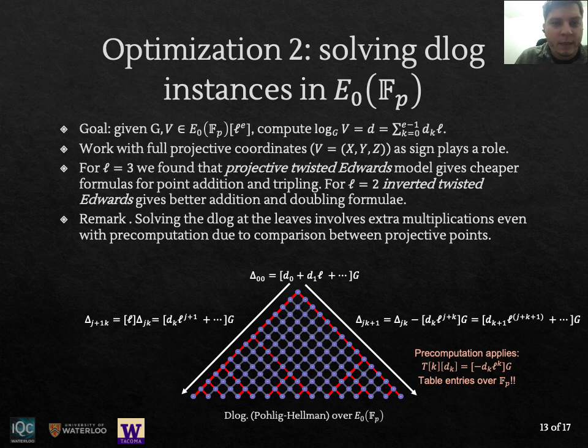And here we should mention that solving the small discrete logarithms at the leaves, you can still use tables for computing those multiples of the generator. But the thing is that to compare with the table entries, we still have to do some extra field multiplications because we have projected points as the leaves. So there's some extra multiplications to be done.